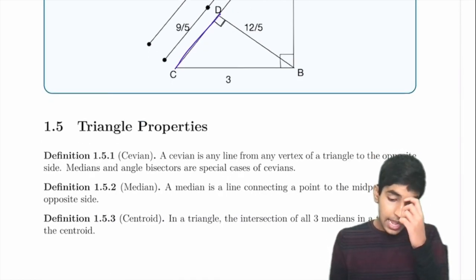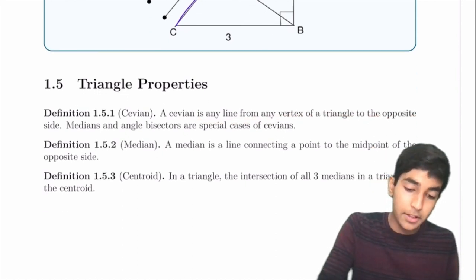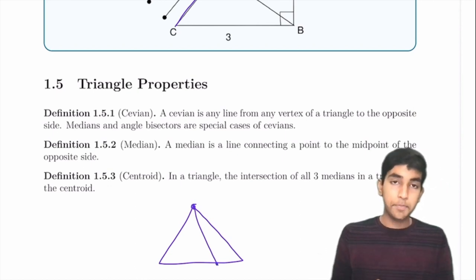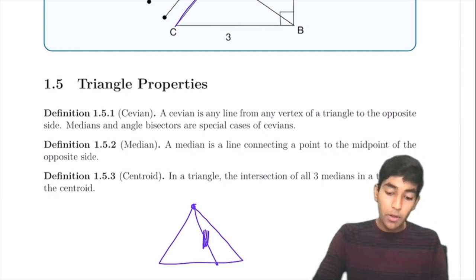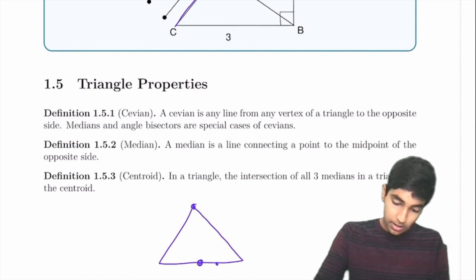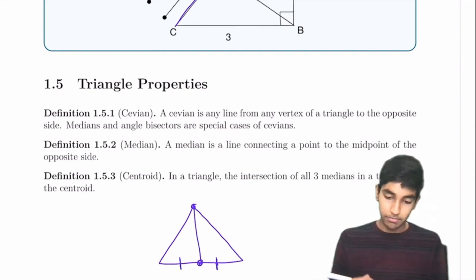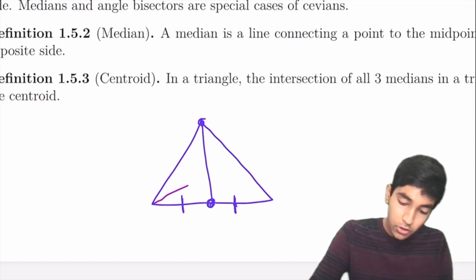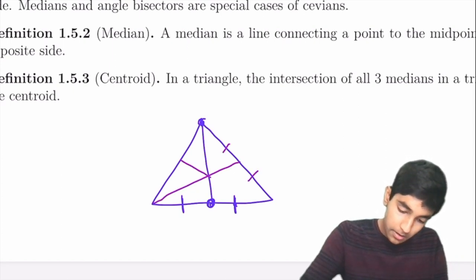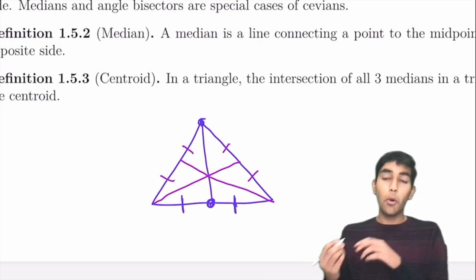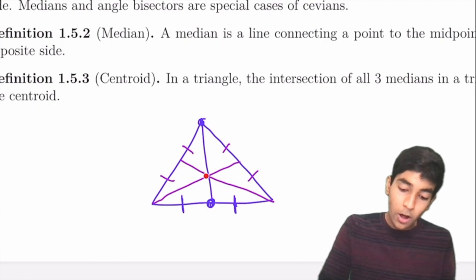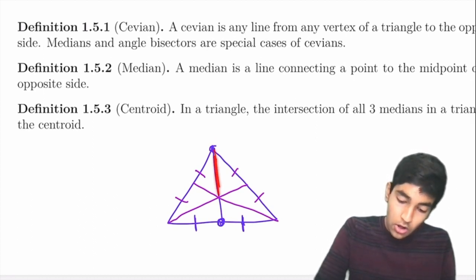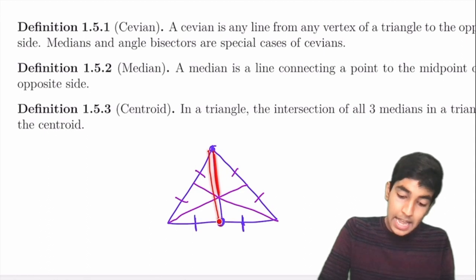Now triangle properties. A cevian is any line connecting a vertex of a triangle to the opposite side. A median is a cevian that connects to the midpoint of the opposite side. The centroid is the intersection of all three medians. There's a special property of centroids: the ratio of the segment from vertex to centroid to the whole median is 2/3.